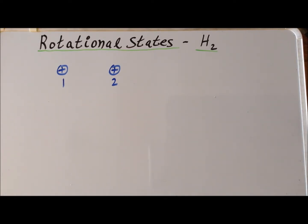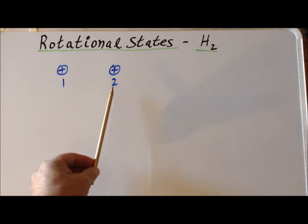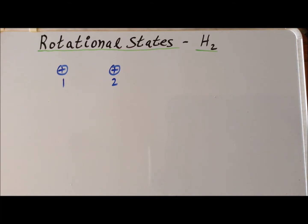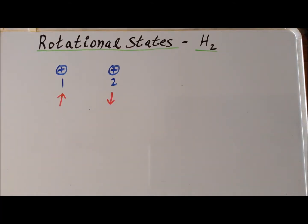The proton is a spin one-half particle, just like the electron is. Therefore, an ensemble of protons must have an antisymmetric wave function. This means if we interchange two fermions, such as the first nucleus and the second nucleus, the wave function must change sign. Protons are spin one-half particles, so the wave function for an ensemble of protons has to be antisymmetric. In other words, protons are fermions and they obey Fermi-Dirac statistics.